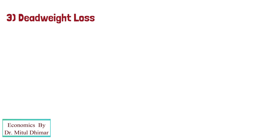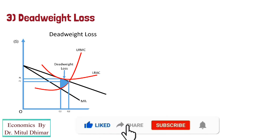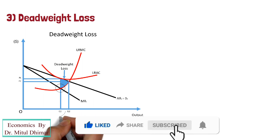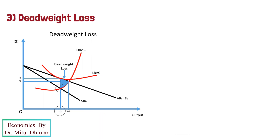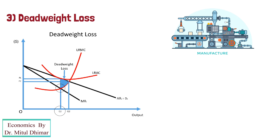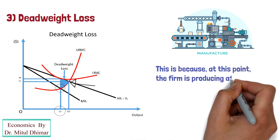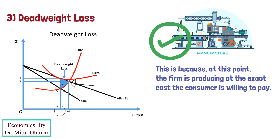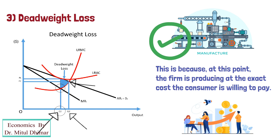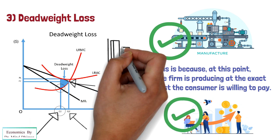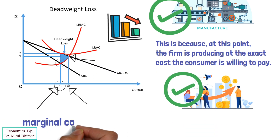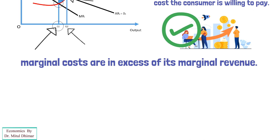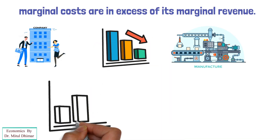Third, deadweight loss. In monopolistic competition, firms operate where MR is equal to MC, which is shown at quantity Q1 on the graph. However, the firm could produce up to where demand is equal to long-run marginal cost, because at this point the firm is producing at the exact cost the consumer is willing to pay. Yet the firm chooses to produce at a lower quantity at Q1 because it seeks to maximize profits. At Q2, it can produce more and sell more goods, but its profits would be lower because its marginal costs are in excess of its marginal revenue, so the firm looks to reduce output in order to maximize profits.